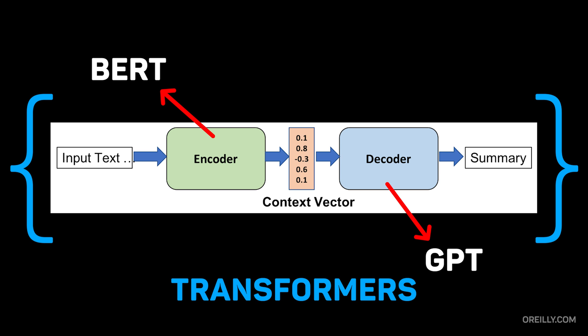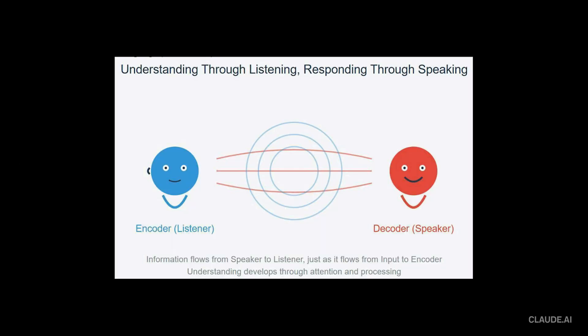Think of a translator who works in two stages. First, they read and understand the text in one language, the encoder, and then they translate and generate the same text in another language, the decoder.